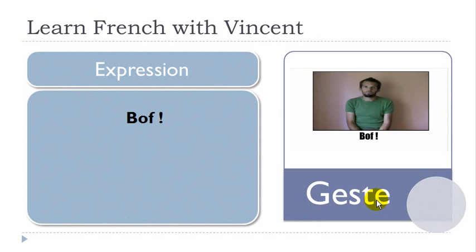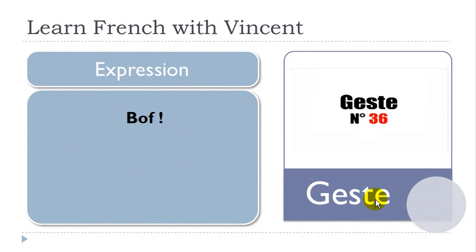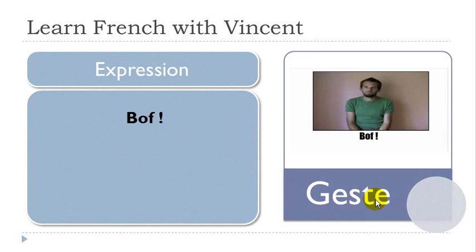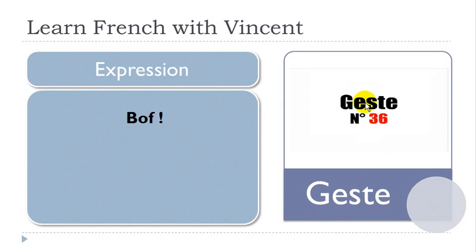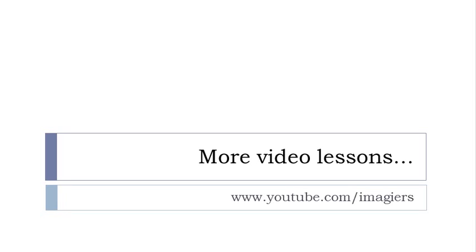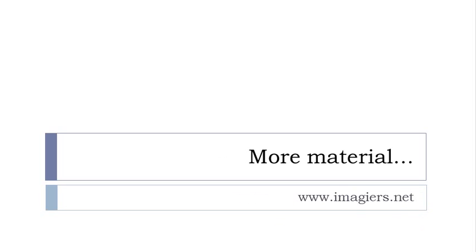So technically, let's say someone proposes to go see something or do an activity you don't really want to do — you say 'bof' and that's it. It's really difficult to introduce all these gestures and expressions and explain them clearly. I hope it was clear enough for you. If you want more videos, youtube.com/imagier is waiting for you, and the website www.imagier.net. Have a great day, bye bye!